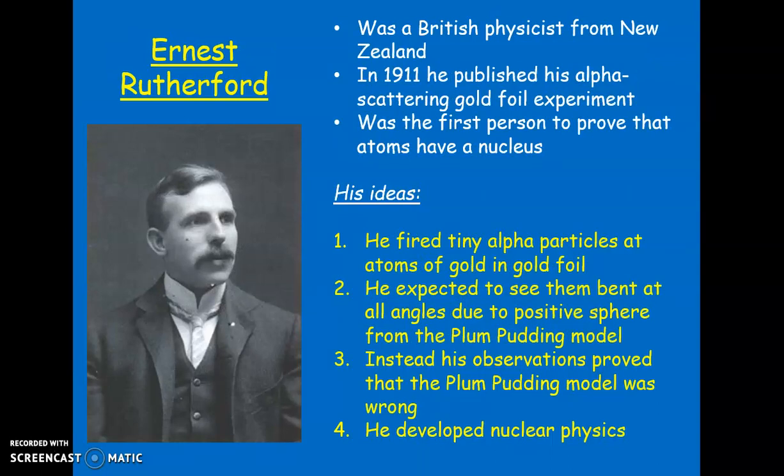Ernest Rutherford worked with J.J. Thomson, and he wanted to prove the plum pudding model. So he did this famous alpha scattering gold foil experiment. He was the first person to prove that there is no spherical charge all throughout, but atoms actually have a nucleus — so he was the first person to think about the nuclear model of the atom. He fired tiny alpha particles at gold foil and was expecting to see them bent everywhere, but he saw different observations. From this, he disproved the plum pudding model and came up with his own nuclear model.